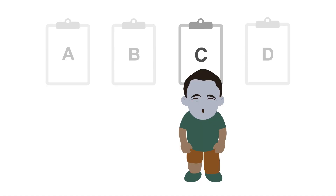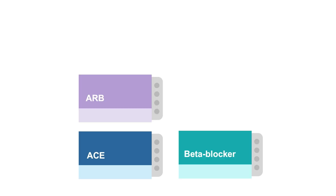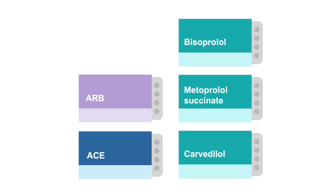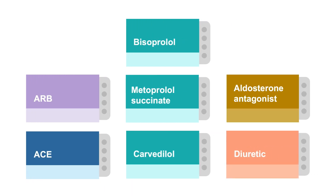Like stage B HFrEF, management of stage C HFrEF includes an ACE inhibitor or ARB and a heart failure-specific beta blocker such as carvedilol, metoprolol succinate, or bisoprolol. Stage C HFrEF will also frequently require diuretics and aldosterone antagonists.